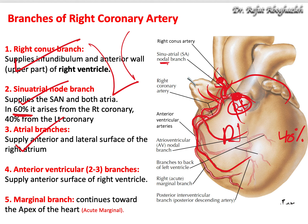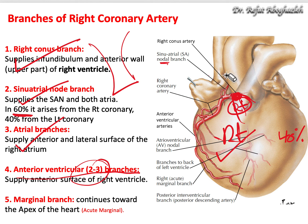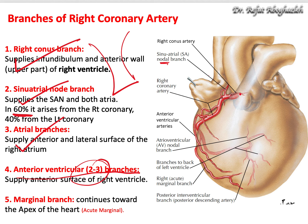Other branches of the right coronary artery include anterior ventricular branches — usually two to three — that supply the anterior surface of the right ventricle. So we have the conus branch, SA node branch, atrial branch, and anterior ventricular branches.